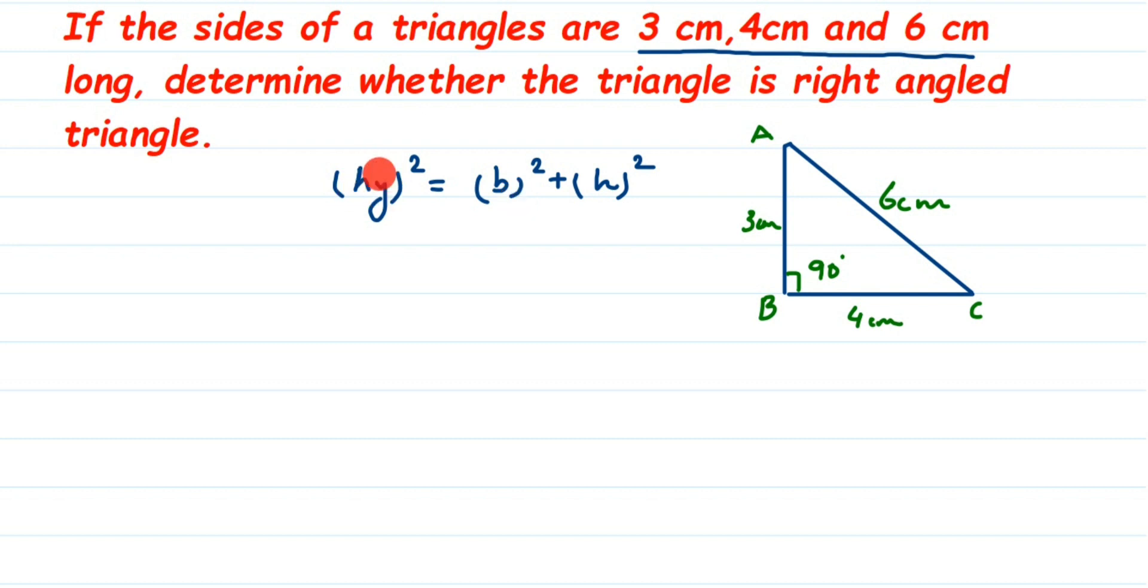The hypotenuse square, hypotenuse here is 6. Substitute 6 here. This is 6 square is equal to base. Base here we have taken is BC, base square plus height. Sometimes they also take perpendicular, perpendicular and height they are same. This is height here, this is base here. Height is 3, so 3 square.